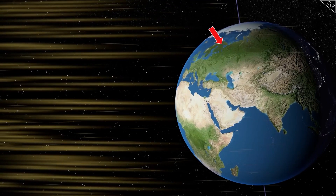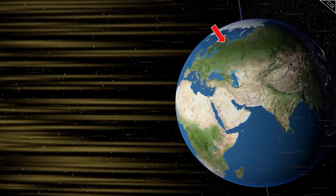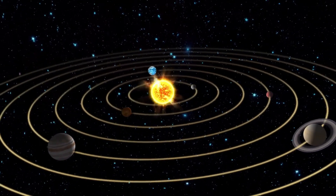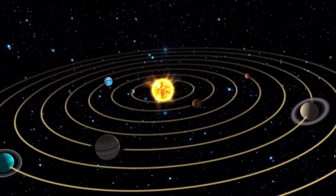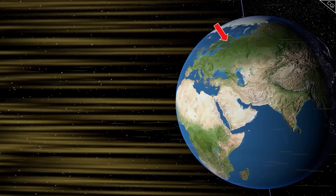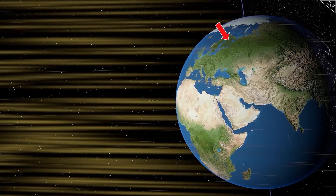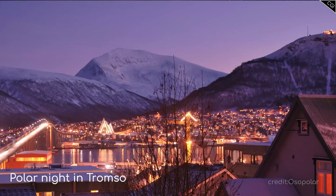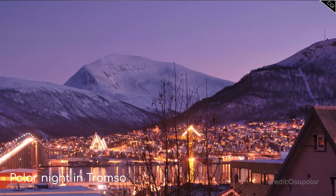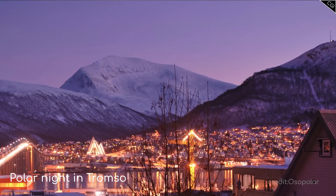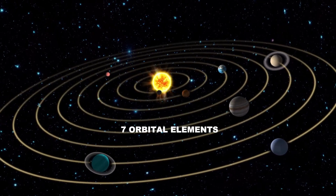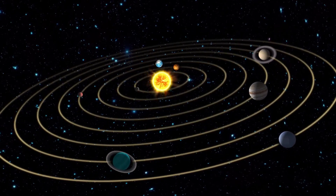In contrast, when the eccentricity is low and the orbit is more circular, the amount of radiation the Earth receives does not vary so much throughout the year. In short, this cycle affects the variation of radiation the Earth receives and therefore affects the intensity of the seasons, contributing to the beginning and end of ice ages.